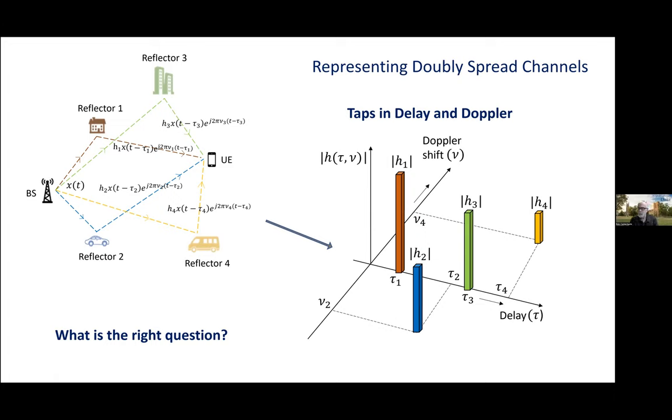So I'm going to follow Woodward and think about channel prediction as a game of 20 questions with a doubly spread channel. And this is a picture of the sort of question that we're going to use. So here we're representing the doubly spread channel as taps in delay and Doppler.